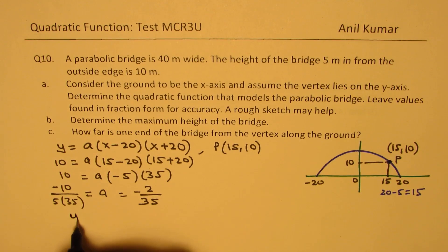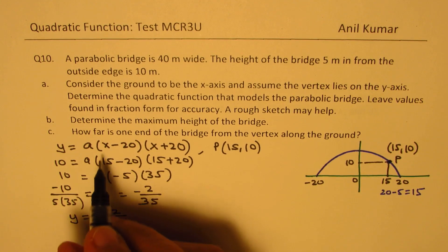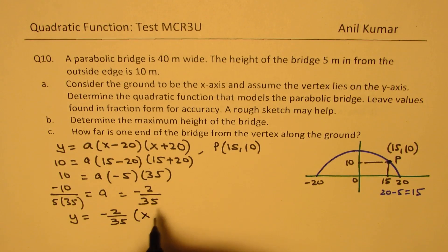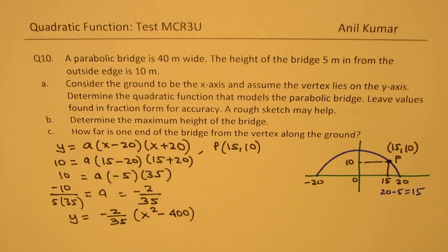So we know the equation is y equals to minus 2 over 35. And you could actually write this as difference of squares. You could write this as x square minus 400. Correct? x minus 20 times x plus 20.